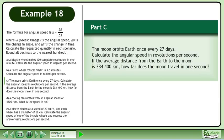In Part C, the Moon orbits Earth once every 27 days. Calculate the angular speed in revolutions per second. If the average distance from the Earth to the Moon is 384,400 kilometers, how far does the Moon travel in 1 second?